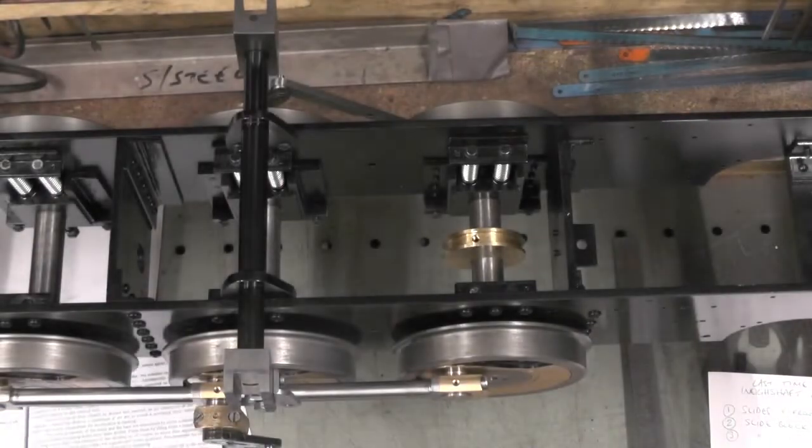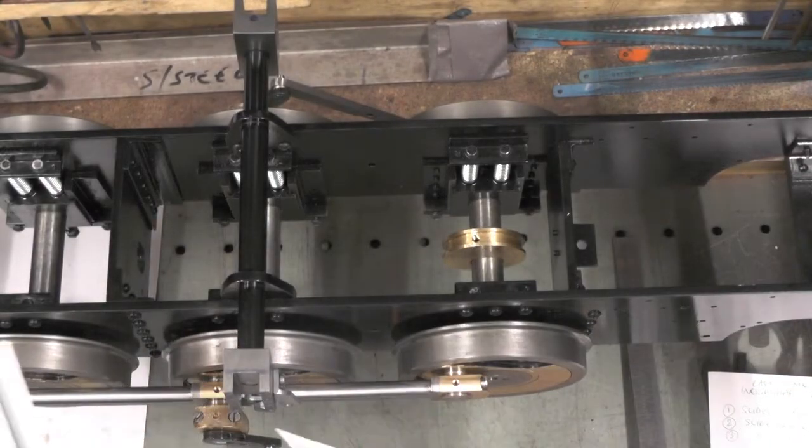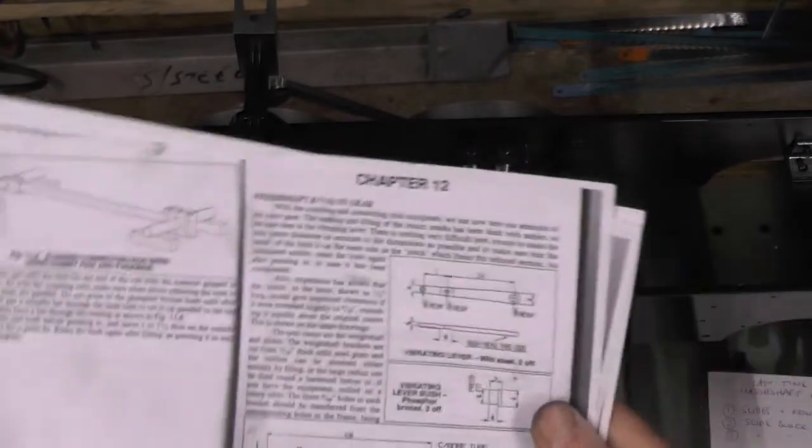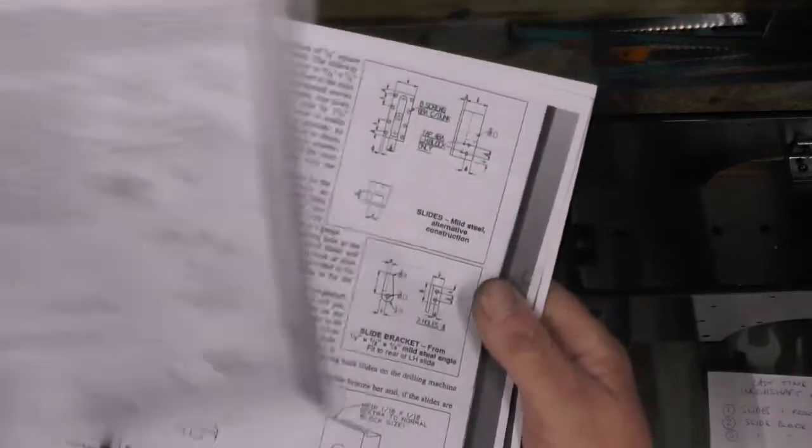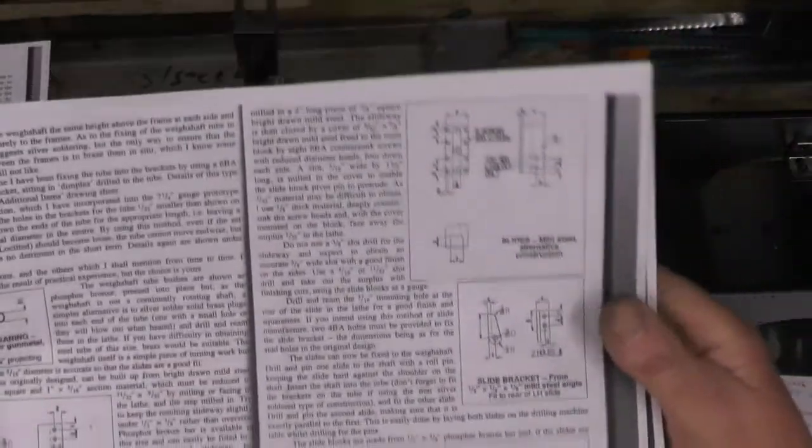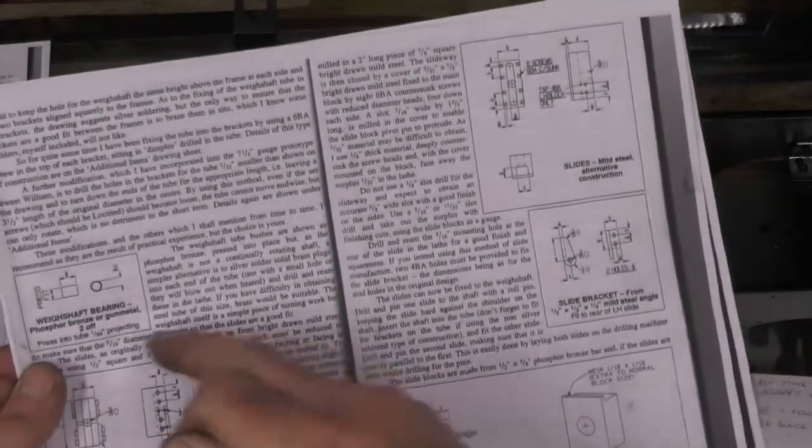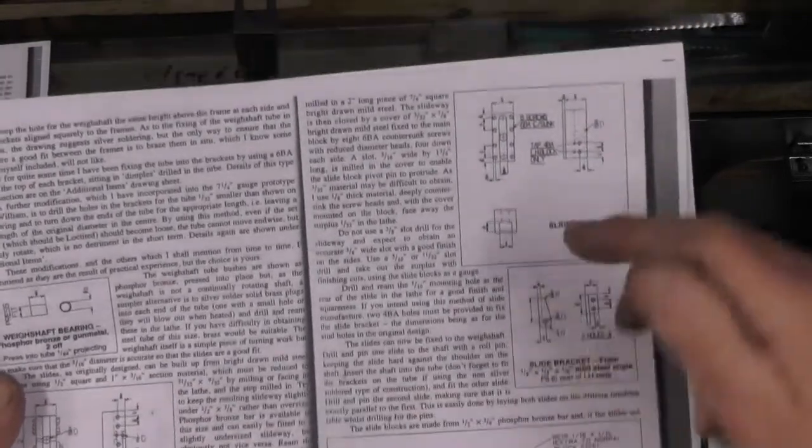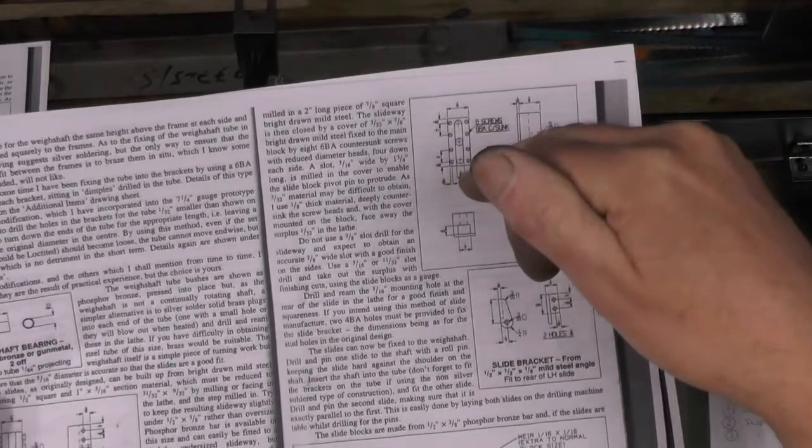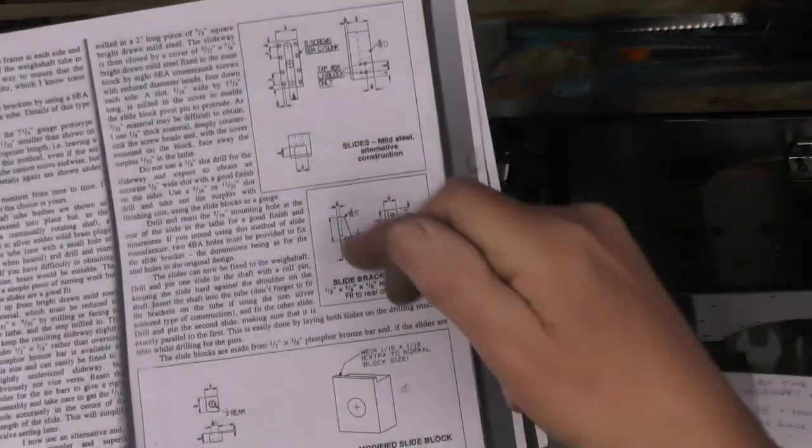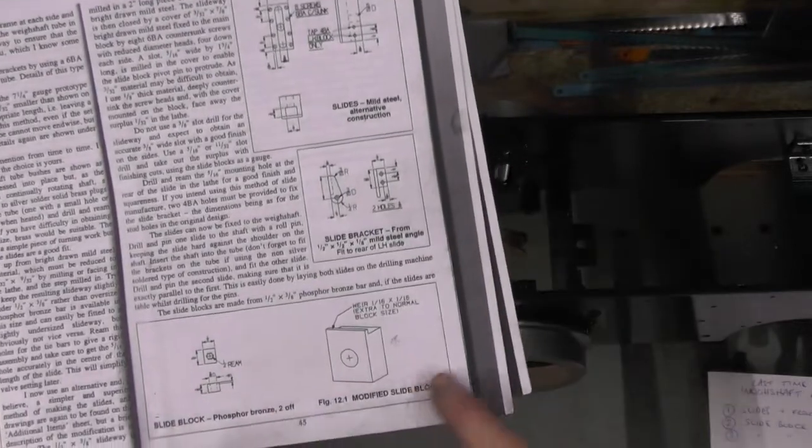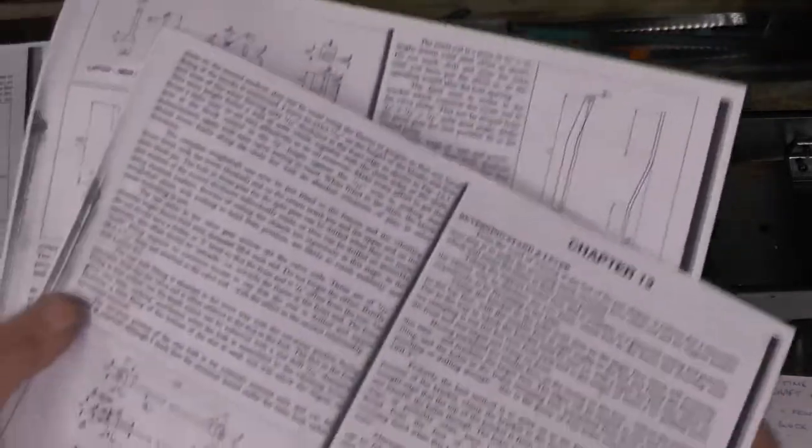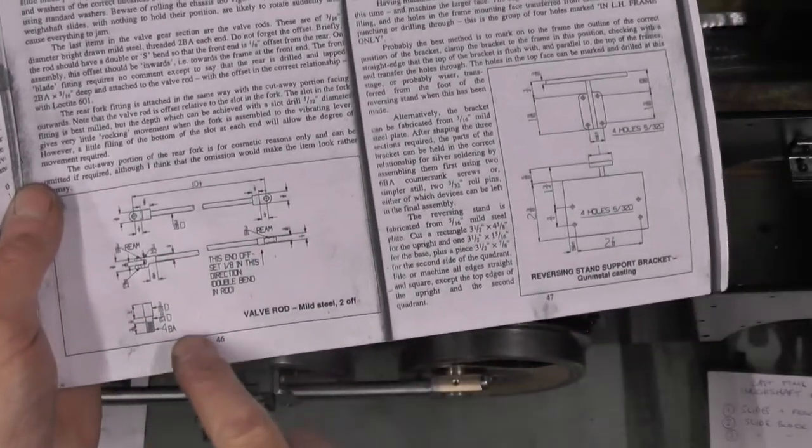So I'll just show you drawing from book in a bit more detail with them components. This is the vibrating lever and its bushes, that's the way shaft assembly there which I did in my last video. Then you've got your slides and there's two ways of doing them slides - there's a fabricated method or the alternative method where you mill a slot in and then put a cover on. Then there's a slide bracket, the slide blocks and the valve rod and all its clevices and pivot pins.